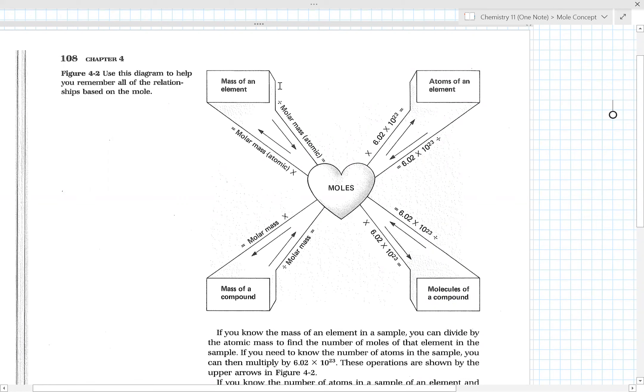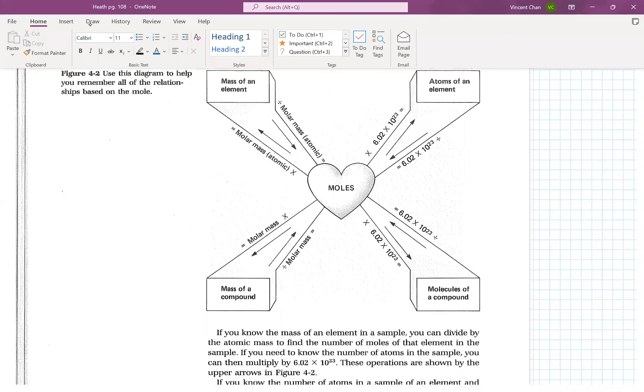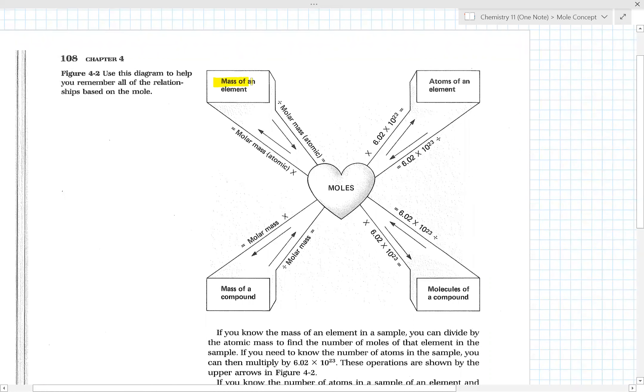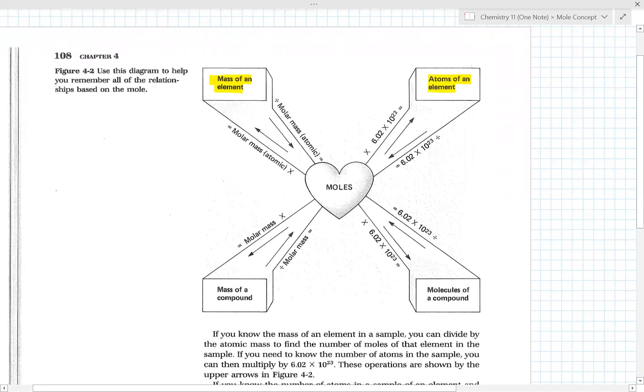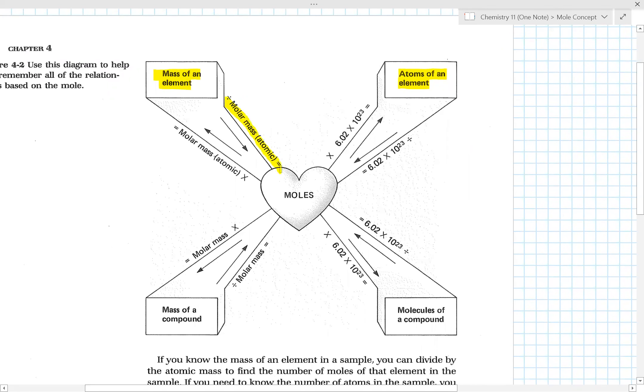Let's say you start from mass of an atom. It basically gives you instructions on how to get to moles. So if you start here at mass of an element, and let's say you want atoms of an element, it gives you the direction. You first divide by molar mass to get the number of moles, and then multiply by 6.02 to get the number of atoms, and so on.